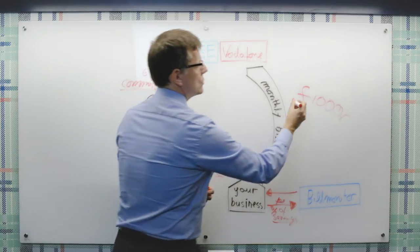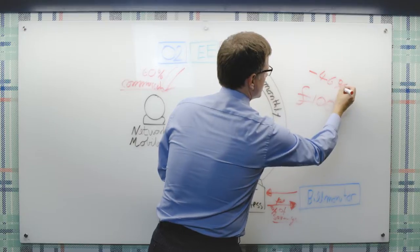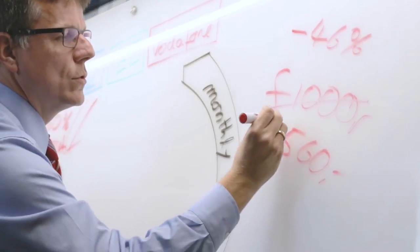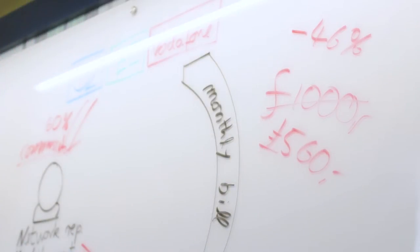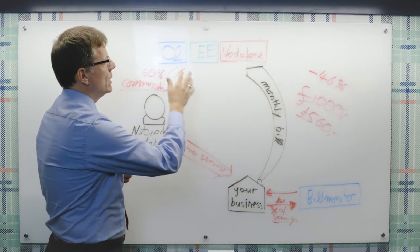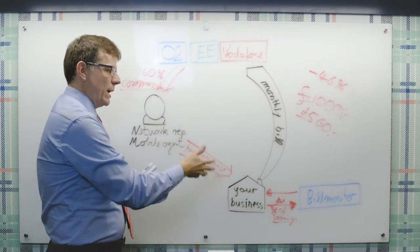We can on average reduce your costs by 46%, therefore reducing your bill to 560 pounds. Savings come from better tariffs, more use of bundles. Bundles O2, EE and Vodafone have, but very rarely offer you.